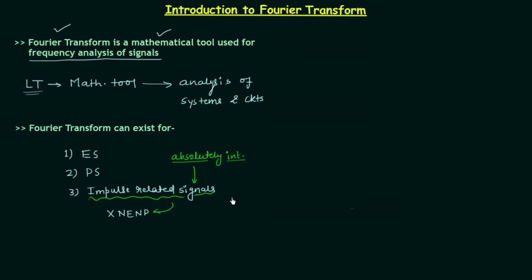We will discuss more about Dirichlet conditions in the next presentation. Energy signals are also absolutely integrable signals, so Fourier transform will exist for energy signals. Now what about power signals? Power signals are not absolutely integrable, but power signals also have a Fourier transform. To obtain the Fourier transform for power signals, we need to use the properties, because the formula of the Fourier transform is applicable to absolutely integrable signals only.